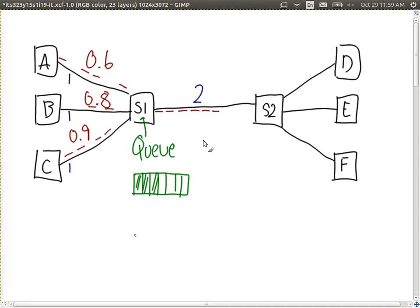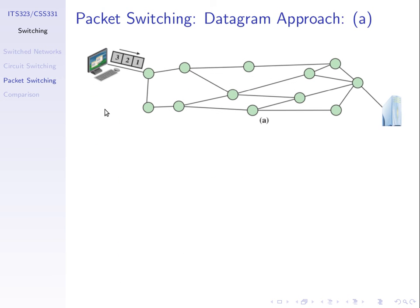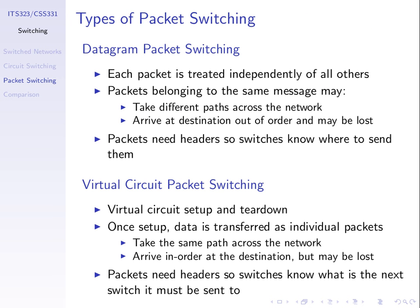Datagram packet switching is what's used in the internet today. It has the advantage of allowing everyone to send and can be more efficient in cases where data sending rates vary. Circuit switching is mainly used for telephone networks. We'll look at one last approach next lecture — virtual circuit packet switching — and then move on to routing: how do we choose the path?